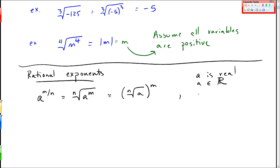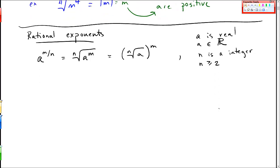N is an integer, and n is greater than or equal to 2. So we have this connection between radicals and rational exponents.